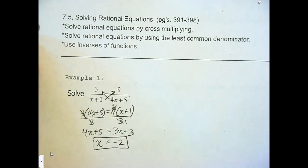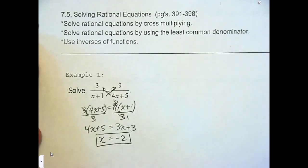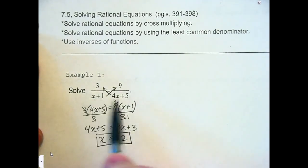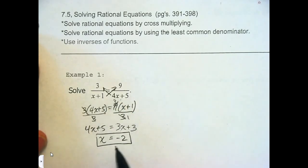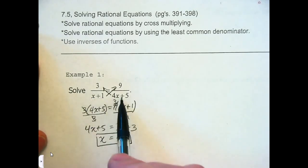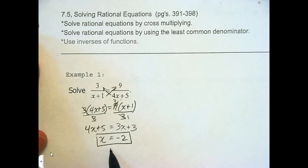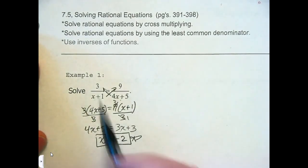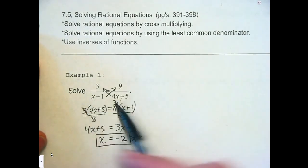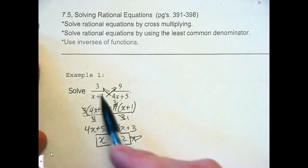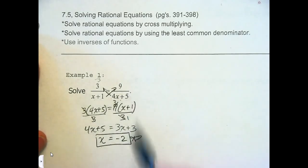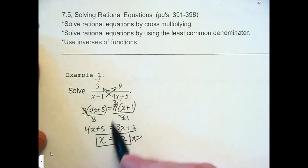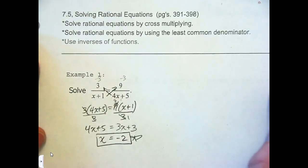Now, in terms of restrictions, x can't equal −1 and it can't equal −5/4. Does x equal one of those? No — so we're okay. To check your work, you just plug it back in. Negative 2 plus 1 is −1. You get −3 on this side. And −2 times 4 is −8, plus 5 is −3; 3 divided by −3 is −3. So they are equal.